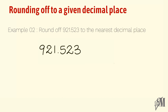Look at this example — 921.523 is to be rounded off to the nearest first decimal place. We consider the digit in the second decimal place, which is 2. Since 2 is less than 5, we neglect the digits after the first decimal place — that is, we neglect 2 and 3. Our answer becomes 921.5.